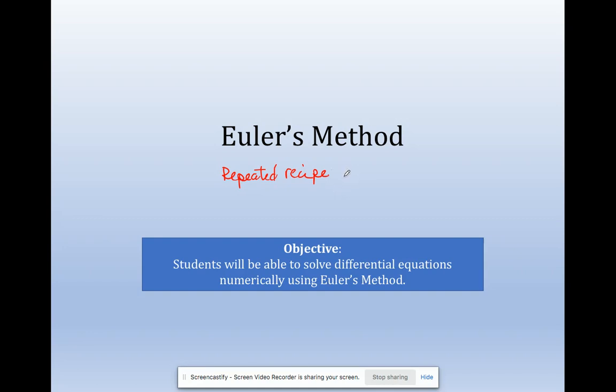And its goal, Newton's method goal, was to use that method to approximate x-intercepts. The goal of Euler's method is to approximate a solution to a differential equation.